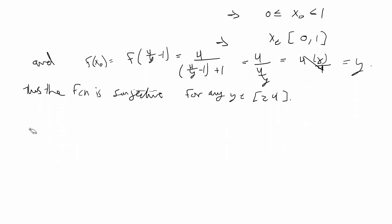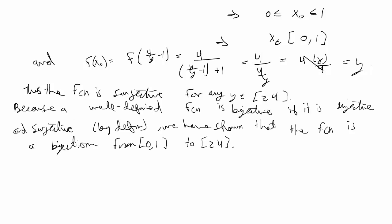To finish, because we have proved the function is well-defined, injective, and surjective, and a well-defined function is bijective if it is both injective and surjective, we have shown by definition that f is a bijection from [0,1] to [2,4].